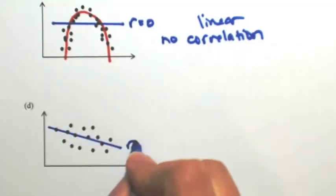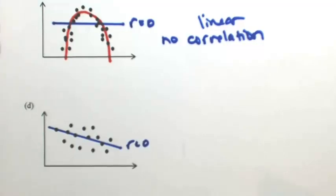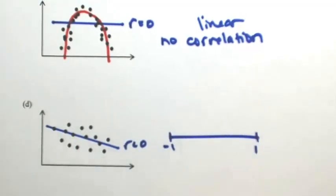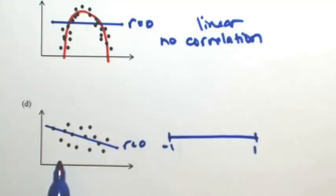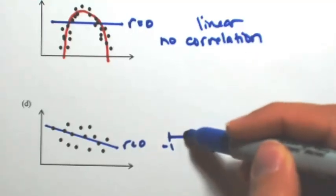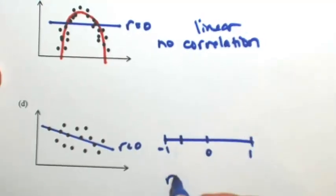So that indicates that your r is going to be negative. So between negative one and one, there is a correlation. So I'm not going to say zero, but it's not as strong as part a or part b. So there's zero in the middle. So I'm going to put it maybe about negative 0.7.